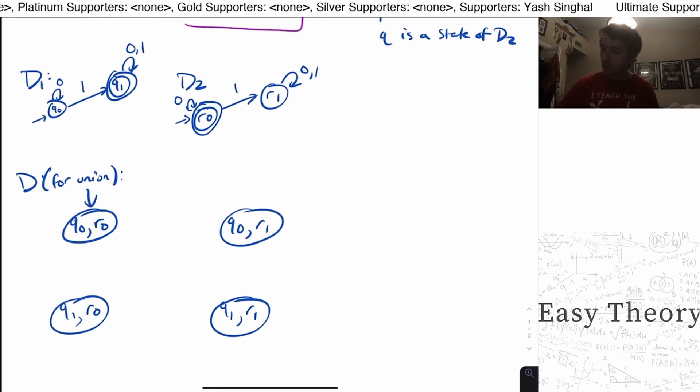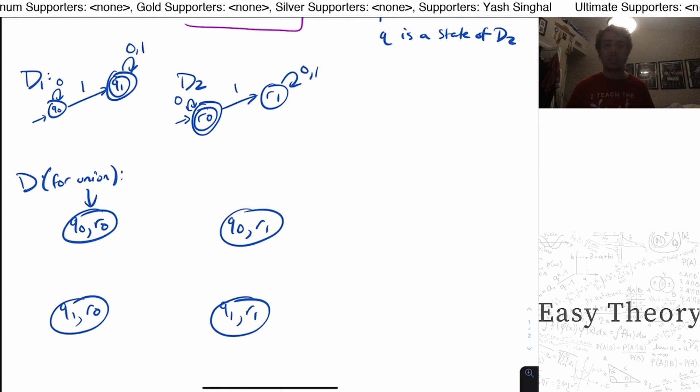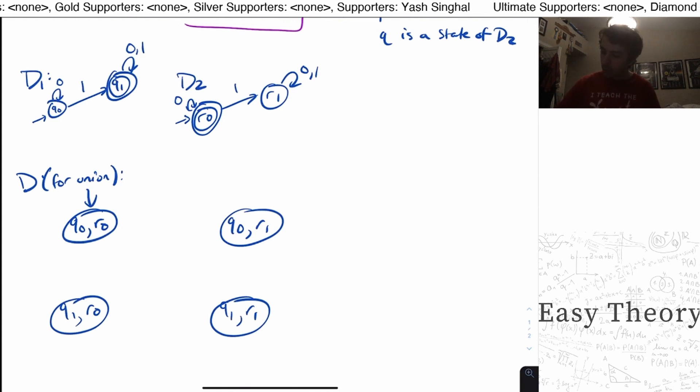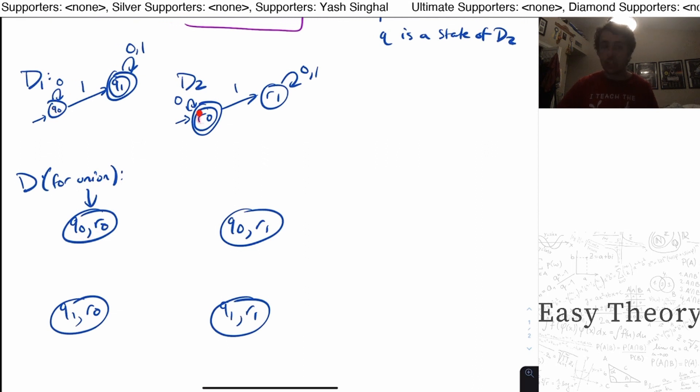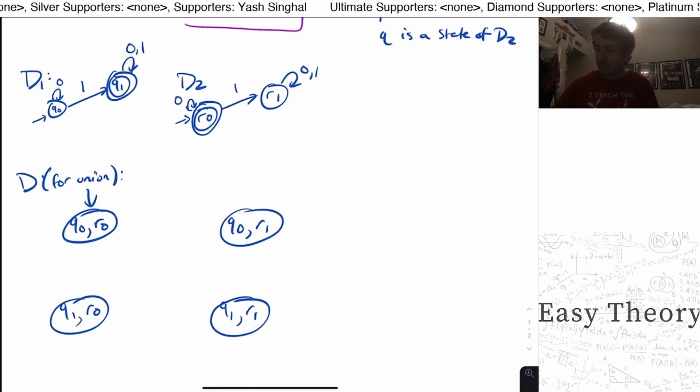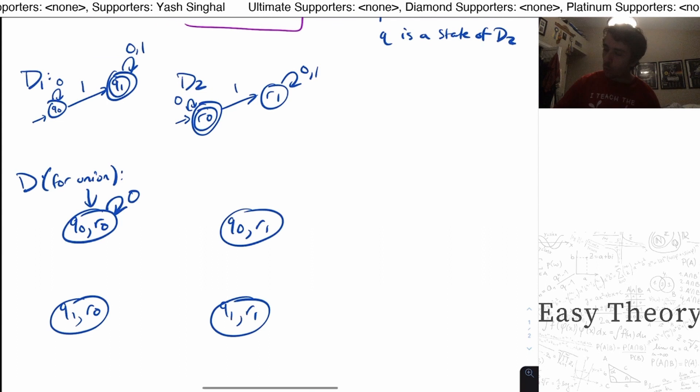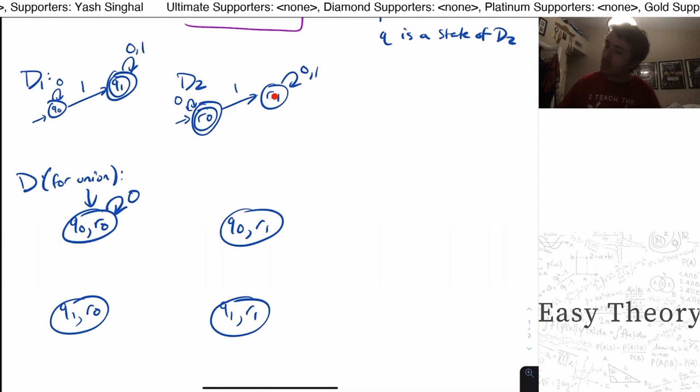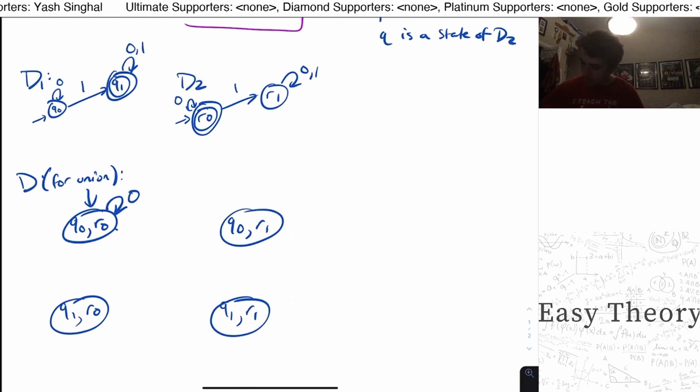And for the transitions, we got to figure out where both machines go on zero and one. Well, from Q0 and R0, on transition zero, they just stay in the same place because they're the same machine other than the final states. So these are going to loop on zero. And on one, the first one's going to go to Q1, and the second one's going to go to R1. So I'm going to have a transition down to here on one.